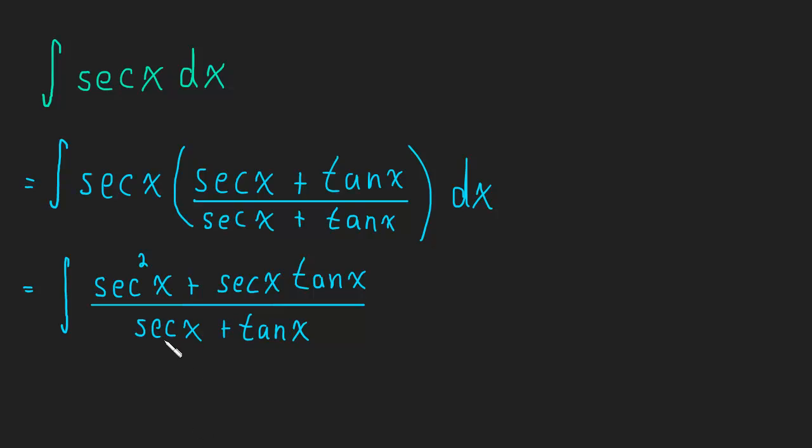And now look at the denominator. The derivative of secant is secant tangent. The derivative of tangent is secant squared. So in other words, the derivative of the entire denominator is the numerator. And that's a really cool thing that happens.